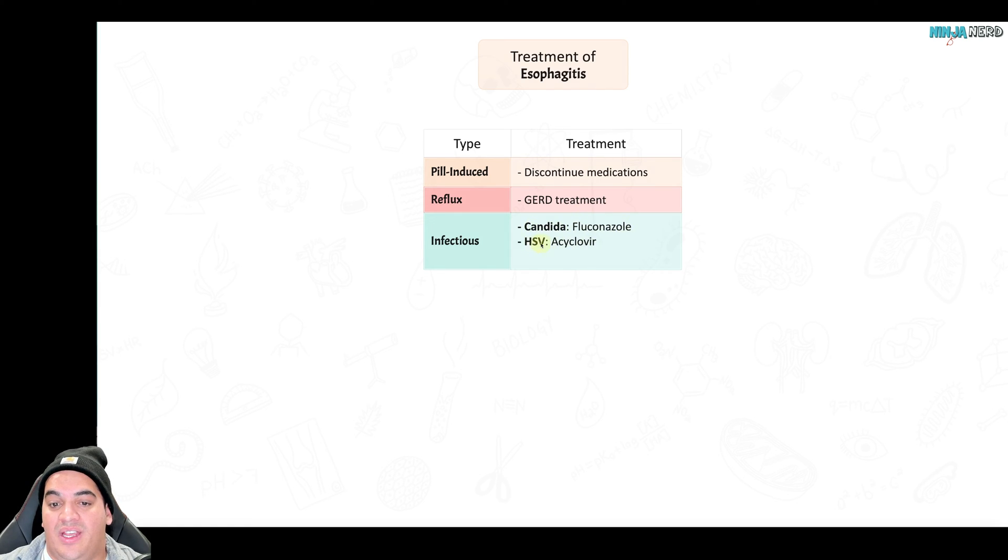With infectious esophagitis, it's about eradicating the infection. With Candida, we treat them with fluconazole. With HSV, if they're potentially sensitive to it, we treat them with acyclovir. If they're resistant, we may go up to ganciclovir. For CMV, it's ganciclovir, but if they're resistant, we may go to something called foscarnet.